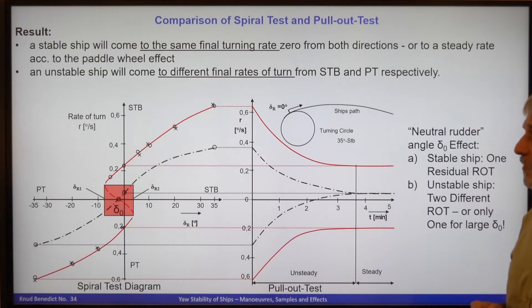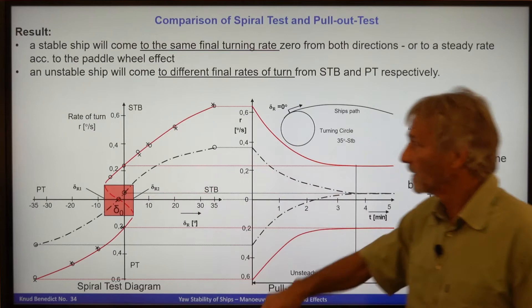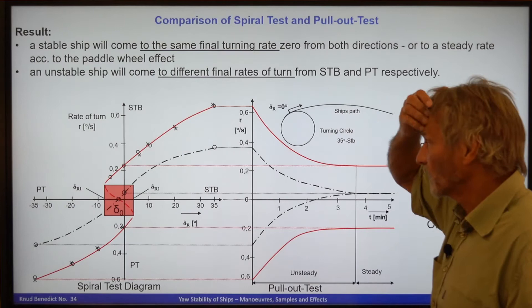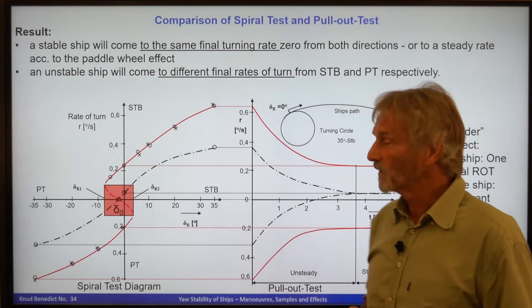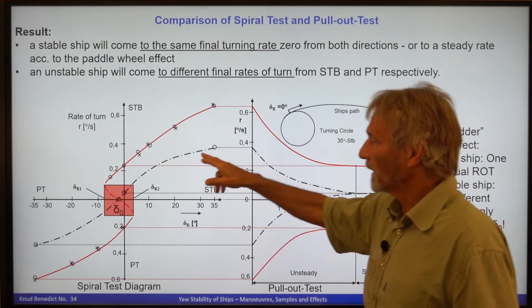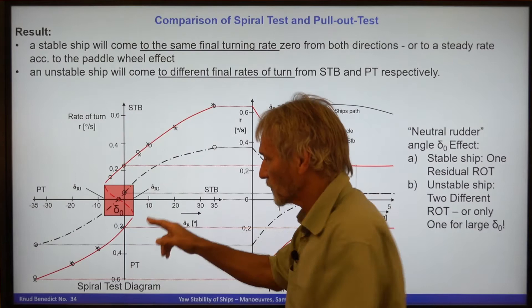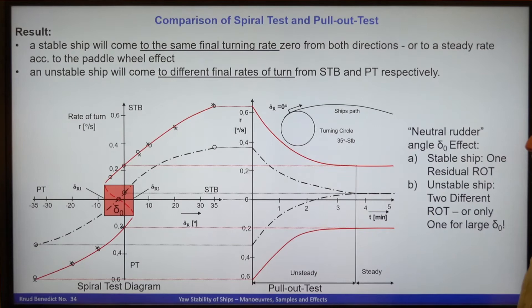To explain and compare the maneuver, I would like to show the comparison between the spiral test result and the pull-out maneuver. On the left side in the spiral test, we have the coordinate system where the horizontal axis shows the rudder angle and the vertical axis shows the rate of turn — as described in the last movie. We have two ships: one for stable conditions and one for unstable conditions. The range of instability is the red marked area.